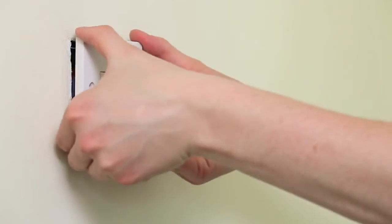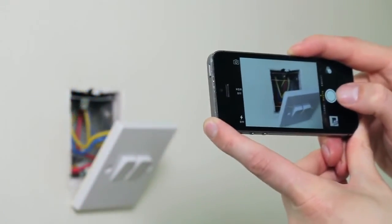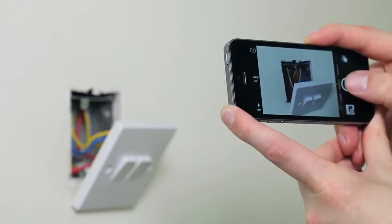It may be useful at this point to mark out or take a photograph of the connections to the existing switch, so that the correct wires can easily be transferred to the new dimmer switch.